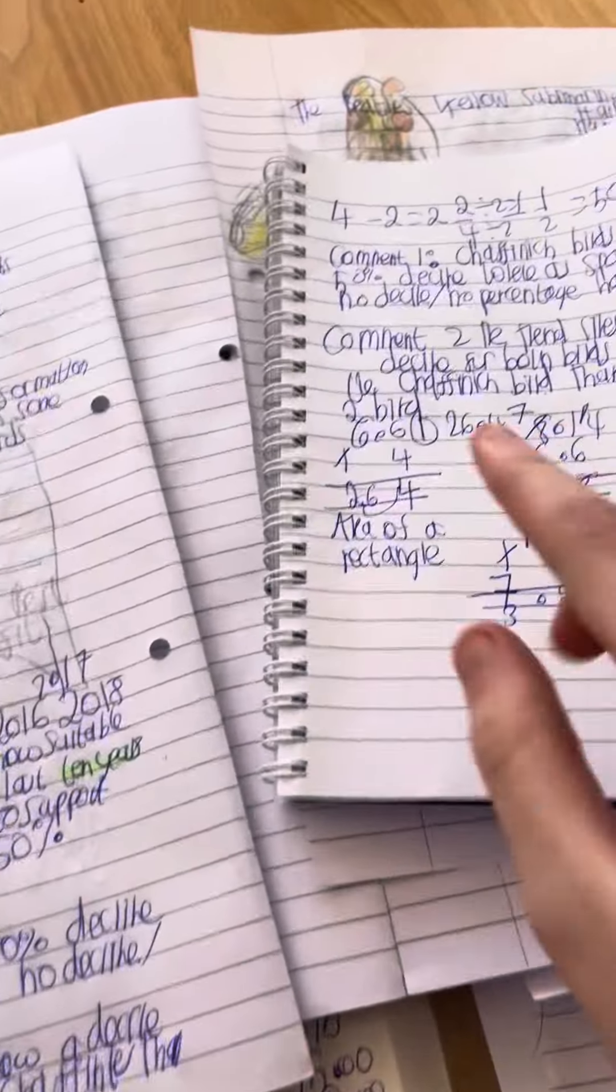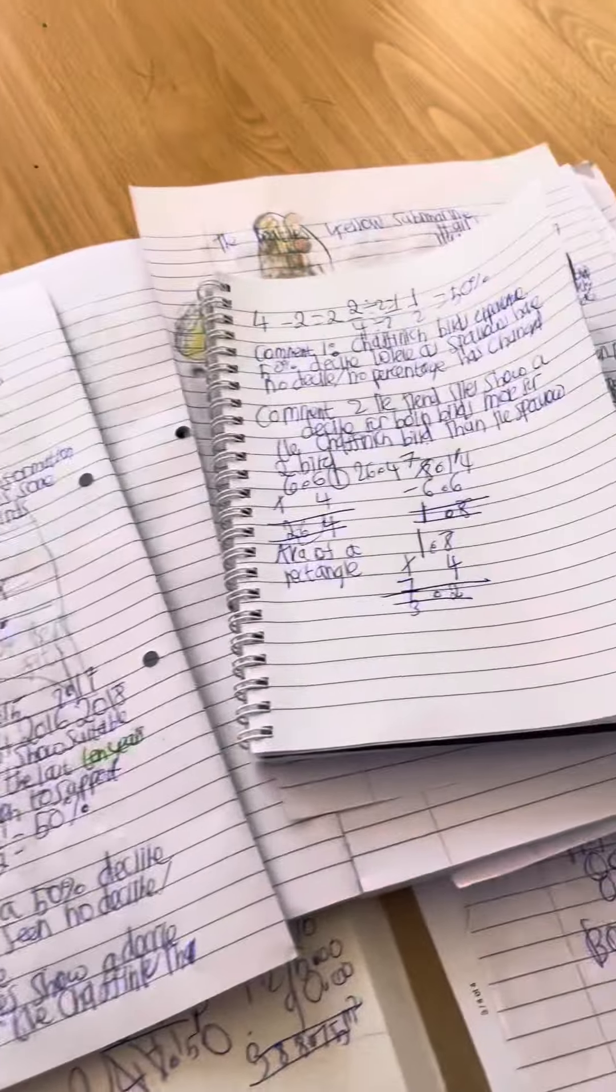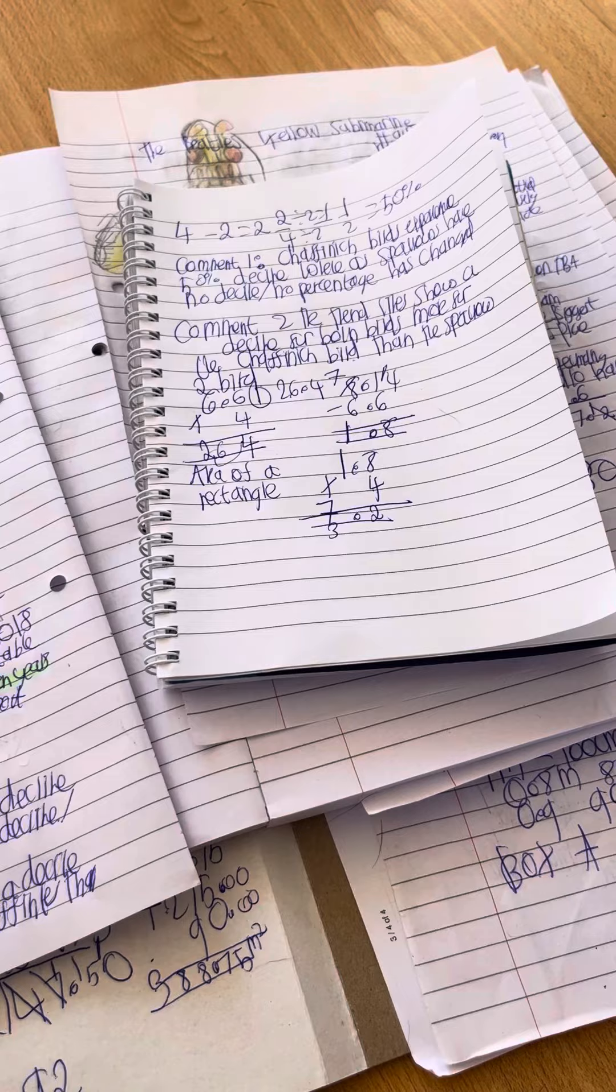The first thing you need to do is do 6.6 times by 4. So 6 times 4 is 24. Then if you do 6 times 4 again, 24, up the 2 you get 26. So 26.4 to 1 decimal place.